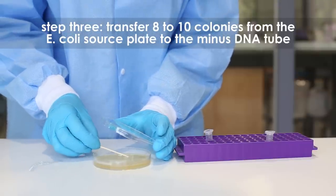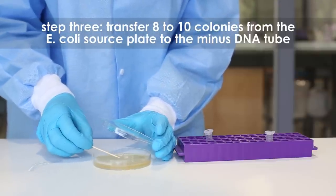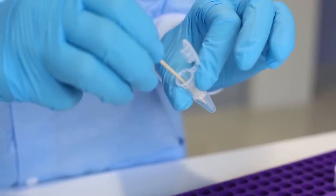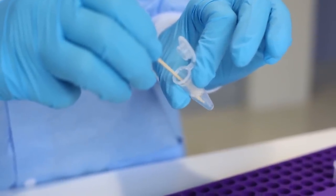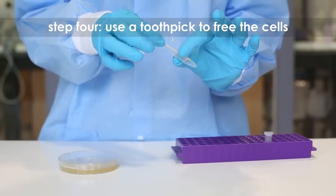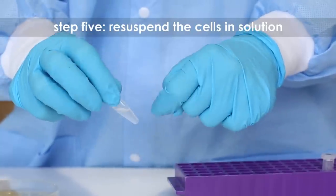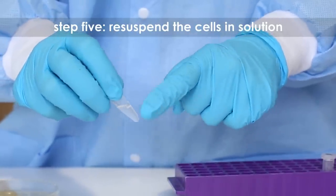transfer 8 to 10 well-isolated colonies from the E. coli source plate to the minus DNA tube. Step four: vigorously twist the toothpick between your fingers to free the cells.